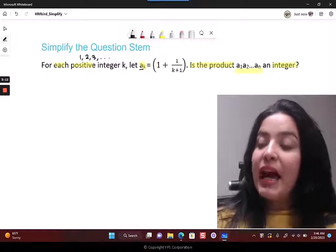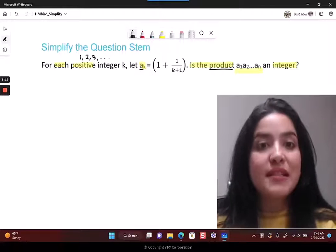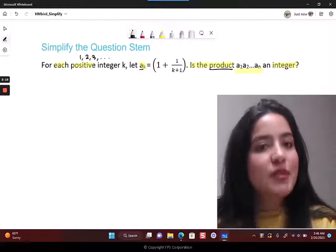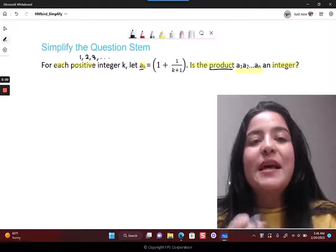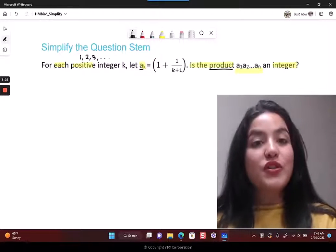And what do I need? I need to see if the product of these terms - first term, second term till the nth term - if this product is something which is an integer or not. So that's what I need to ultimately determine. Now again, if you are intimidated by it, you're not alone.